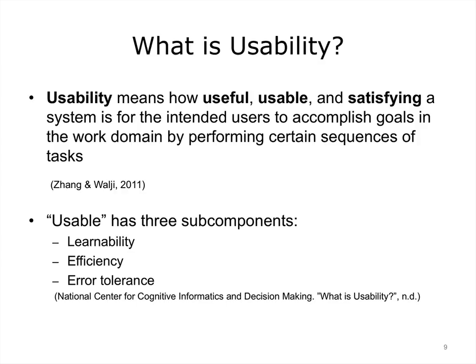So, what do we mean by usability? It reflects the quality of a user's experience when interacting with a product or system, and we can enumerate several factors that affect that experience. Usability means how useful, usable, and satisfying a system is for the intended users to accomplish goals in the work domain by performing certain sequences of tasks. The scientists at the National Center for Cognitive Informatics and Decision Making, or NCCD, have given a lot of thought to this definition. Let's look at those three key concepts — useful, usable, and satisfying — that make up usability for an electronic health record, or EHR.